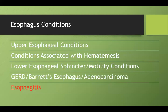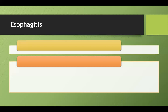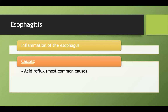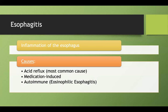We're going to finish up this lecture by talking about esophagitis. Esophagitis just means inflammation of the esophagus, and there are several different causes. There's acid reflux, which we've talked about as the most common cause, but you can also get medication-induced esophagitis, autoimmune esophagitis — also known as eosinophilic esophagitis — and then infectious esophagitis through Candida, HSV1, or CMV.